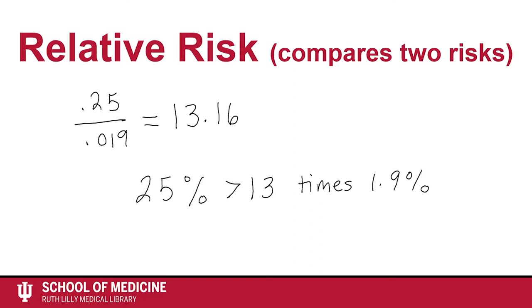So the chance or risk of picking any heart out of a deck of 52 cards is greater than 13 times the chance or risk of picking the Ace of Diamonds out of that same deck. We just compared two risks, and this is called relative risk.